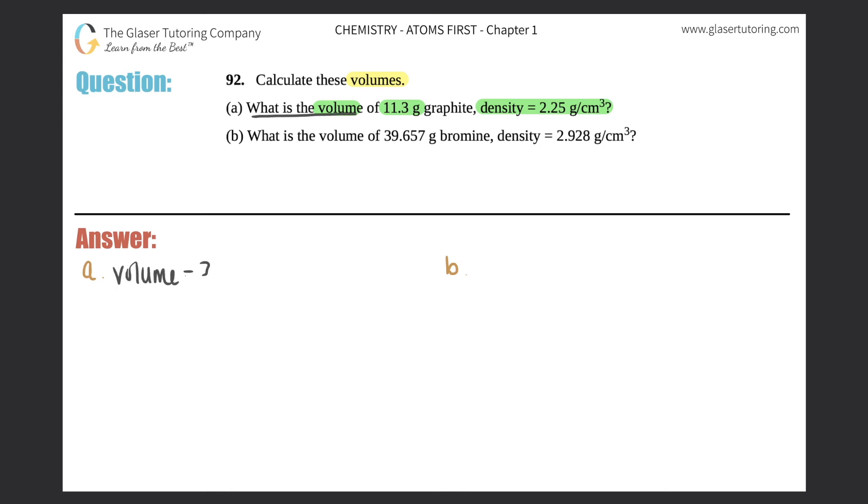Okay, so what is the volume? That's the question - we need to see what the volume is. Here they told me 11.3 g. You should know g is grams, and grams is always a unit for mass every single time, 100% of the time. So mass equals 11.3 grams.